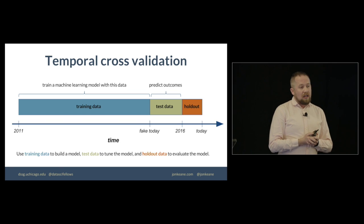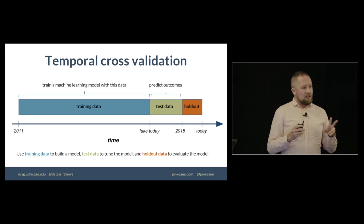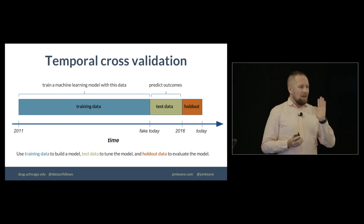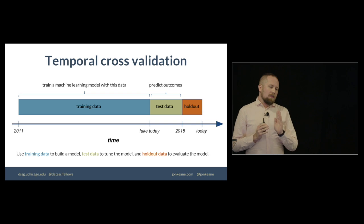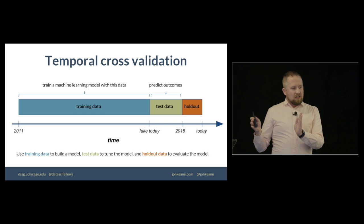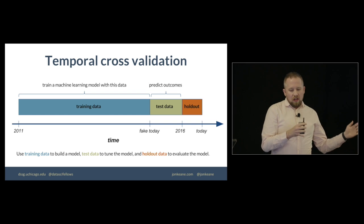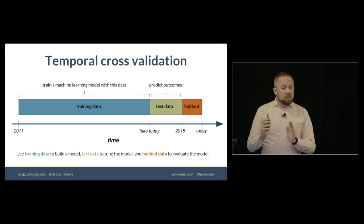So for this, we used temporal cross-validation. We had data over five years. And so we would establish a fake today, which is basically like today is the day that we're going to stop taking information from our model. We'll look at everything in the past and then try and make predictions going forward for a year.